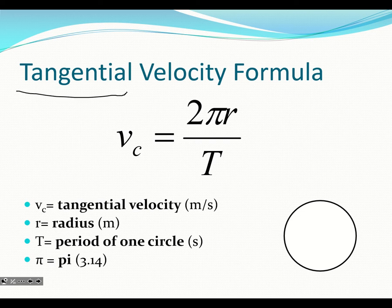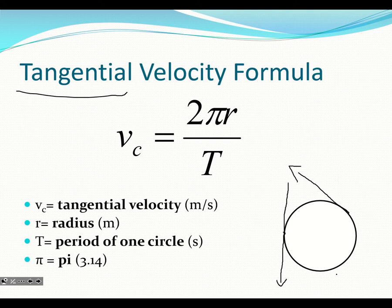The word tangential comes up because if I draw a tangent line on a circle — a straight line that only touches at one point — that's our tangent line. So if an object is moving in a circle and I let it go, it would always fly off at a tangent. That's why it's called tangential velocity — because that's always the direction. It flies off at a tangent.